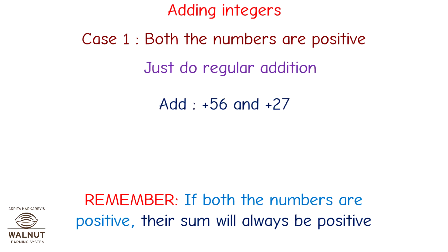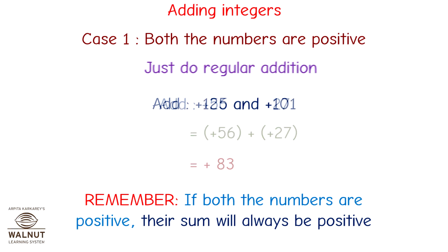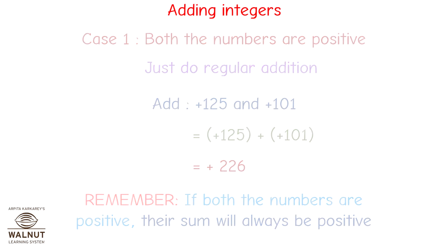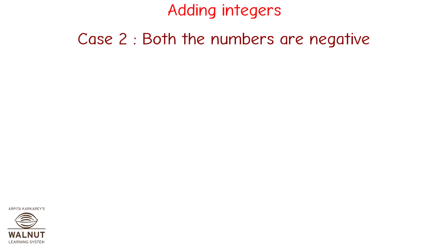Plus 56 and plus 27 is equal to plus 83. Plus 125 and plus 101 is equal to plus 226.